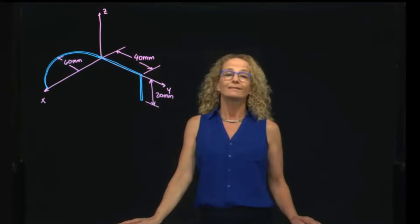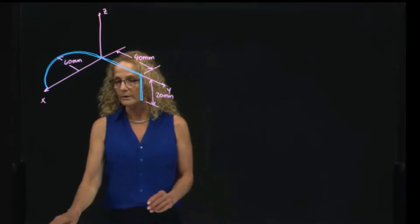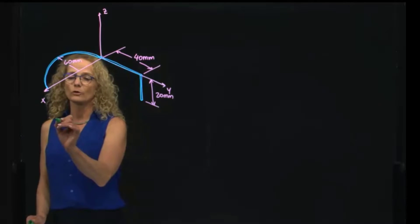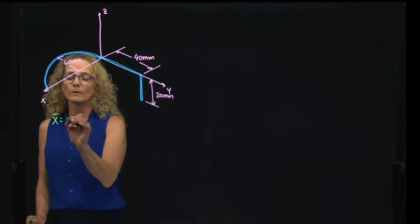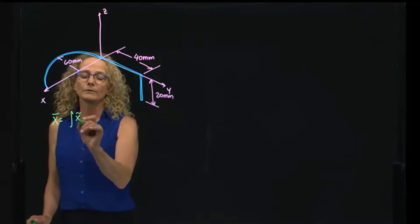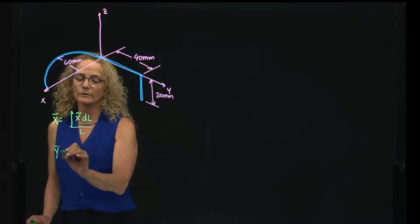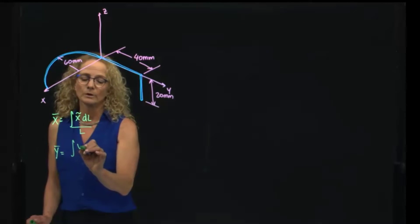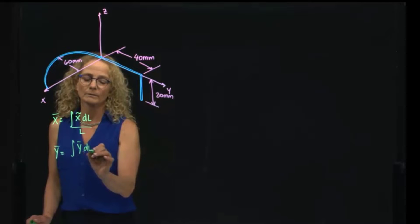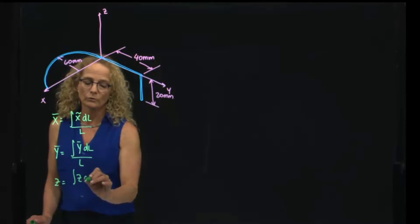The way that we find the centroid of a composite area, you recall that the definition of centroid will be, in this case we have a line, so it will be this definition. And since we have three dimensions, we will use the three dimensions. But an integral, as you recall, is not more than a summation.